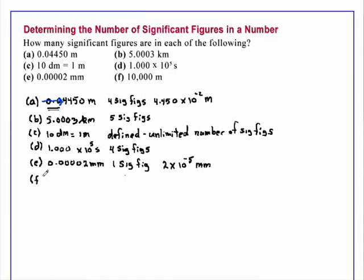Part F, 10,000 meters, is more problematical. Because there's no decimal point, we really don't know whether this has 1 or 2 or 3 or 4 or 5 significant figures. And so in this example, we simply have to say that the answer is ambiguous.